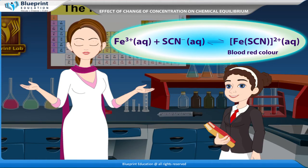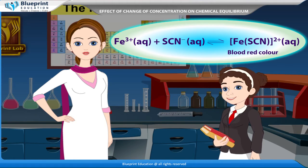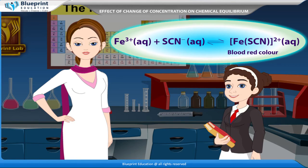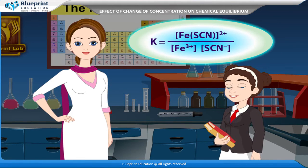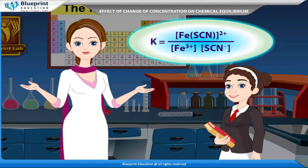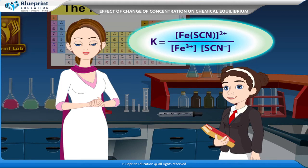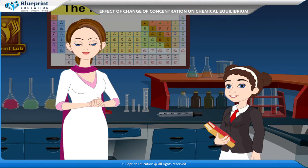The equilibrium reaction is: Fe³⁺(aq) + SCN⁻(aq) ⇌ FeSCN²⁺(aq), which is blood red in color. Therefore, the equilibrium constant K = [FeSCN²⁺] / ([Fe³⁺][SCN⁻]).